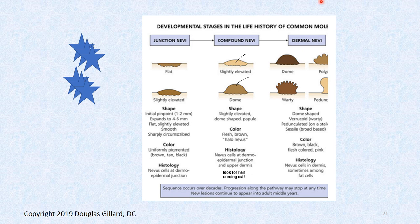There's a view of where we've been — the stages of a run-of-the-mill nevus. These are acquired nevi: junctional are flat and darker looking, then they become slightly elevated as compound nevi, and dermal nevi tend to be lighter in skin color but definitely bigger and more warty looking.